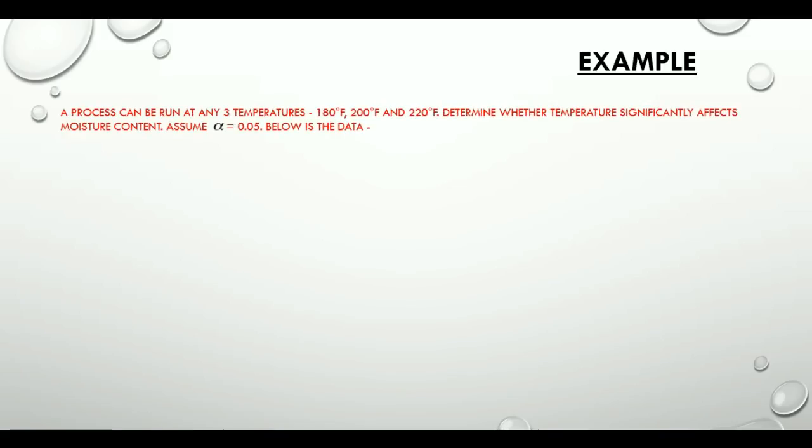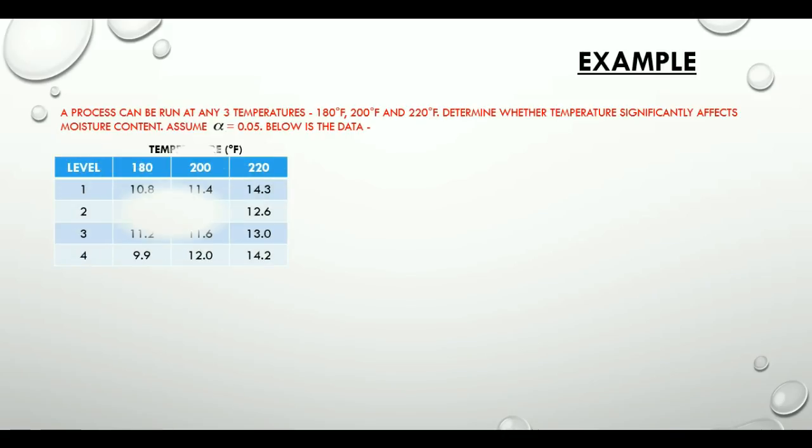A process can be run at any three temperatures: 180 degree Fahrenheit, 200 degree Fahrenheit and 220 degree Fahrenheit. Determine whether temperature significantly affects moisture content. And assume alpha to be 0.05. And here is the data that we have.